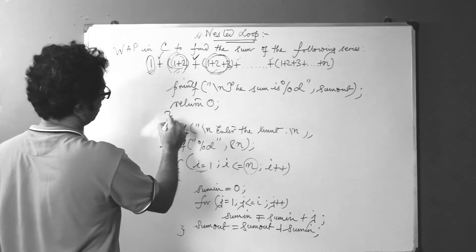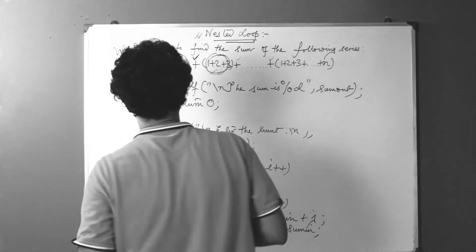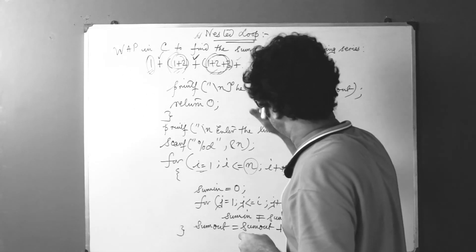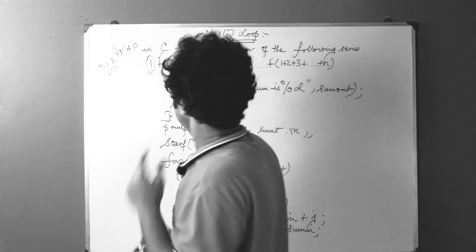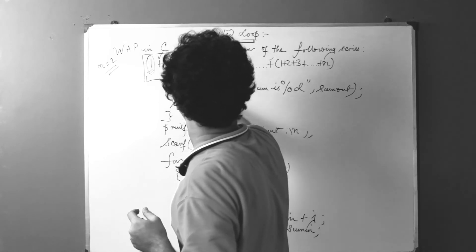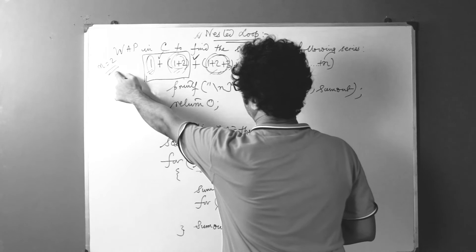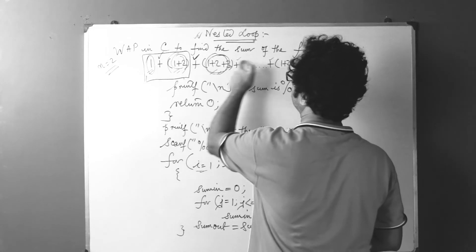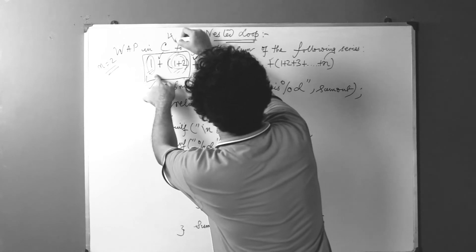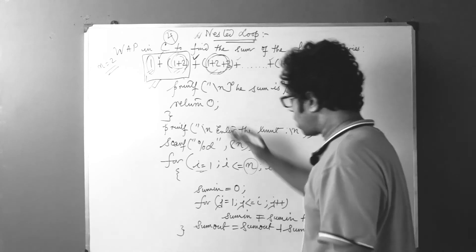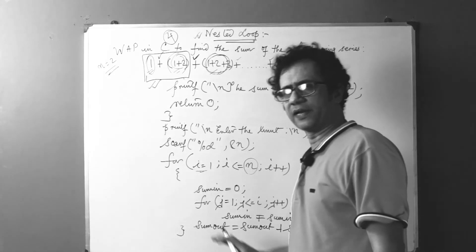Now let's do a sample dry run to understand the program logic. For simplicity, we take n = 2, meaning we calculate: 1 + (1+2). The expected result should be 4. Let's verify that our program yields 4.